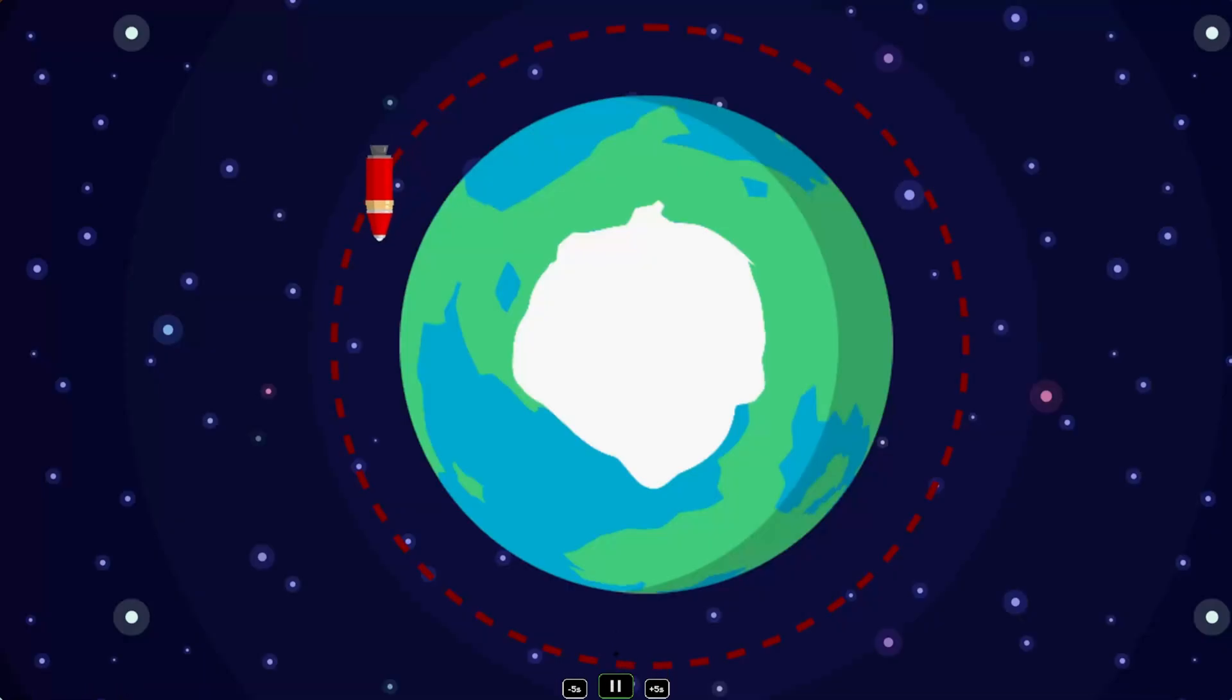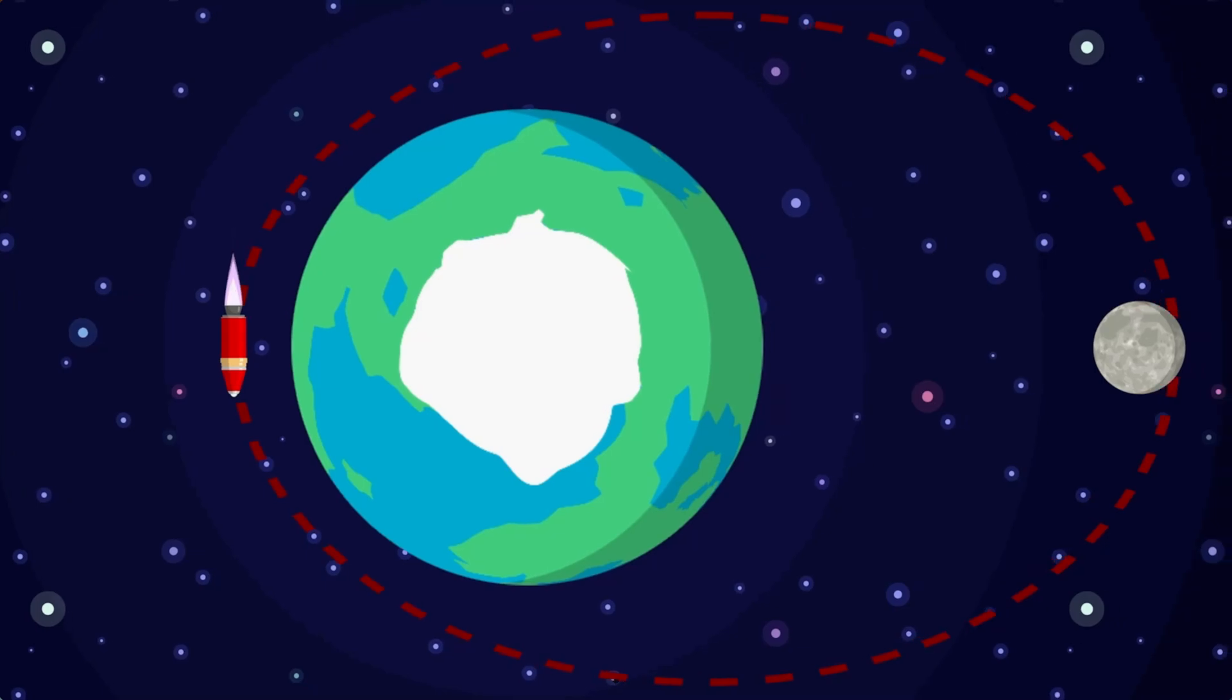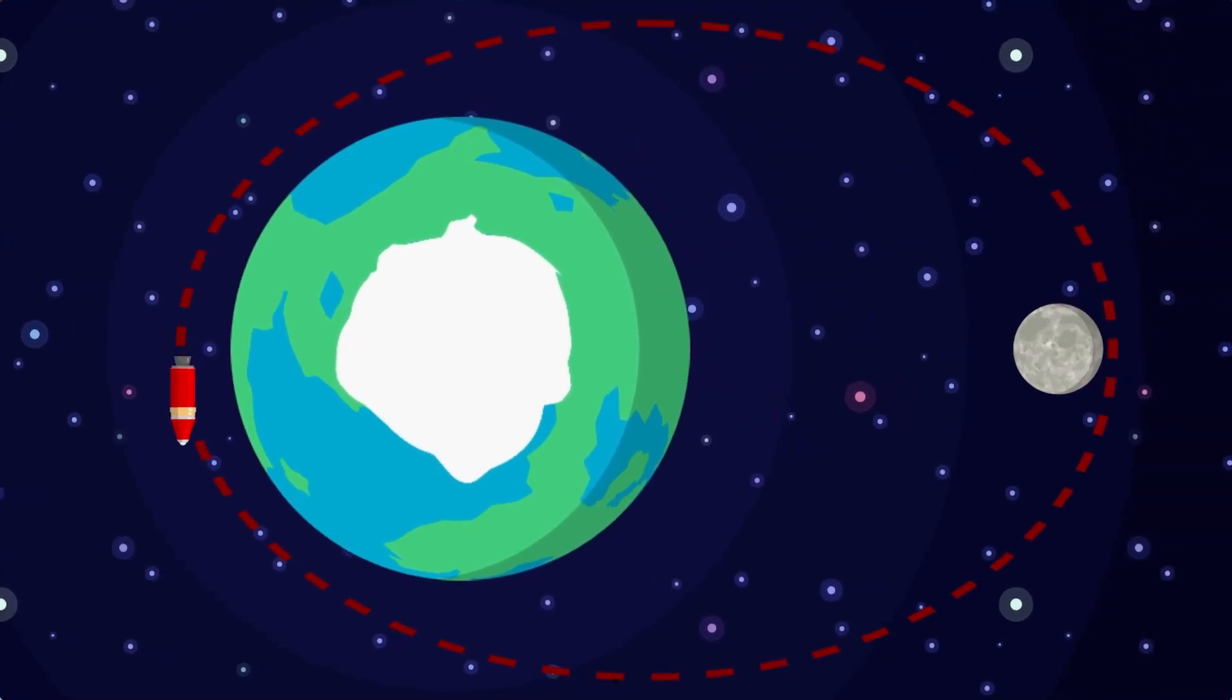Orbital Transfers. As you know, the faster you go, the higher your orbit gets. If you get moving fast enough, your orbit may cross the orbit of some other object, like a moon or a planet.